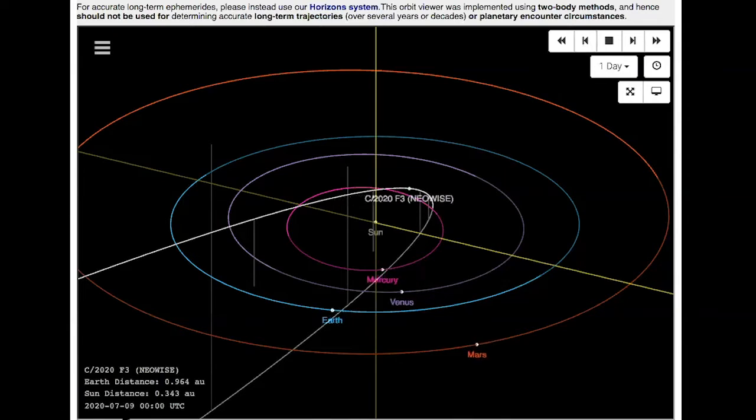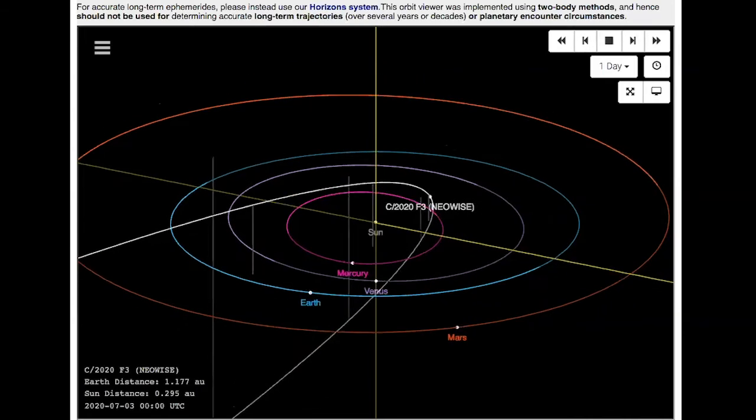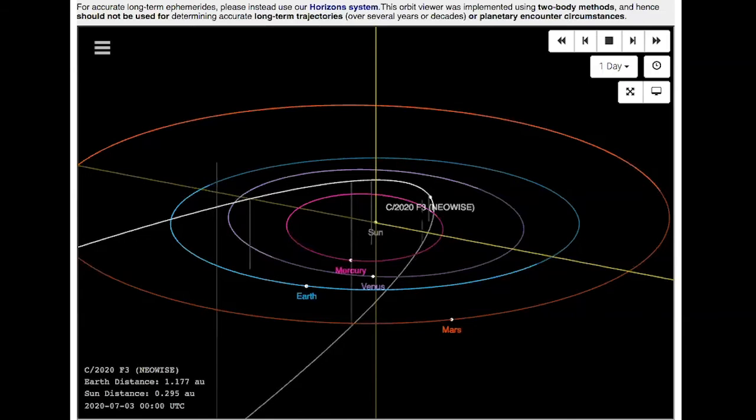As you can see here down in the corner, this is the date. The closest approach to the sun was about on July 3rd here. And if you look, you can see all the planets, Earth, Venus, Mercury, and here's the comet.